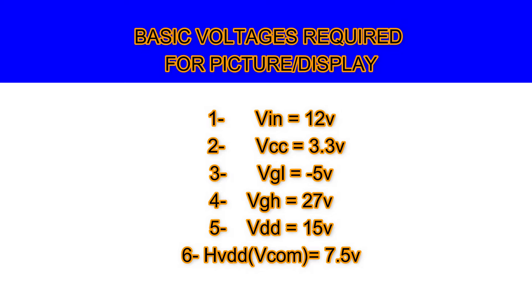The first voltage is Vin — it is 12V. The second is Vcc — it is 3.3V. The third voltage required for picture is VGL — it is about minus 5V to minus 8V, depending on the model. The fourth voltage is VGH — it should be between 20V and 30V, with the maximum typically around 25 to 27V.